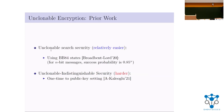In terms of constructions, we know how to get Unclonable Encryption satisfying search security using BB84 states, as shown by Broadbent and Lord. Specifically, if the message is of length n, the success probability of the adversary is upper bounded by 0.85 to the n, so for large n it becomes very small. For Unclonable Indistinguishability, we have some preliminary results showing how to go from one-time to multi-time to public-key encryption generically, but we don't know how to construct even one-time secure Unclonable Indistinguishable Encryption.